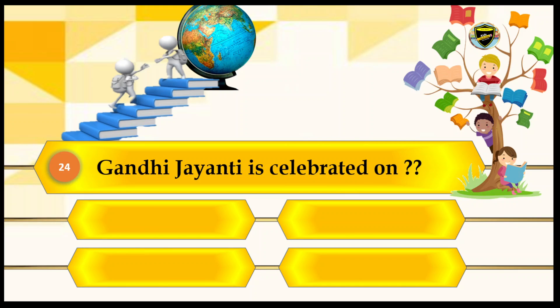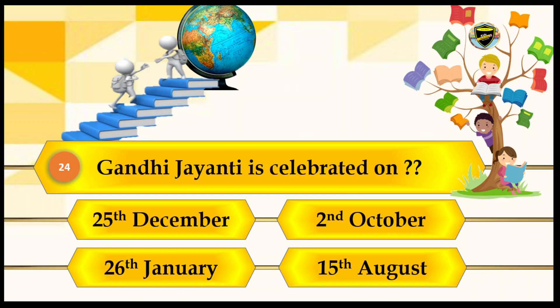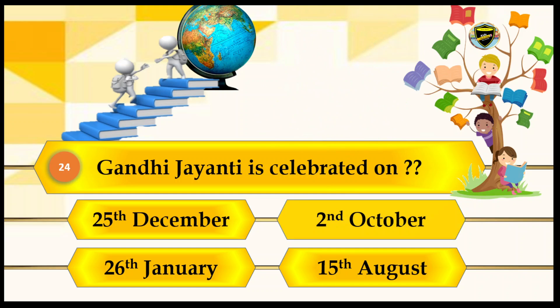Gandhi Jayanti is celebrated on which date? Options are 25th December, 2nd October, 26th January, and 15th August. The answer is 2nd October. Let's see if 2nd October is the correct answer. That's the correct answer.